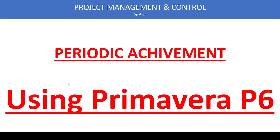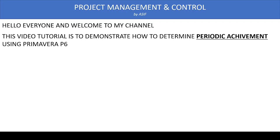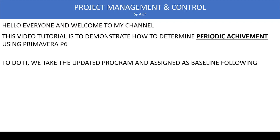Hello everyone and welcome to my channel. In this video tutorial, I am demonstrating how we can determine periodic achievement using Primavera software. When we are developing a program, we are making particular activities and milestones to check the performance of the project. As the project progresses, we need to report what achievement we did in a particular period of time, and Primavera is an excellent tool to determine these activities.